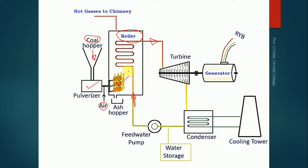Inside the tube we have water, and outside the tube we have hot gases. Heat is transferred from the hot gases to the water, and the water gets converted into steam at very high pressure. At the inlet we have water, and at the outlet we have high pressurized steam, which then goes to the turbine.